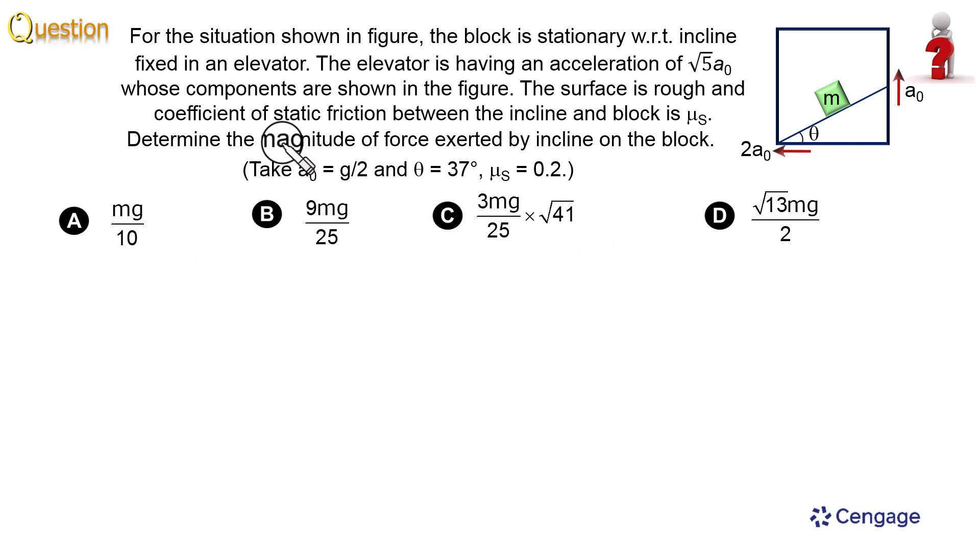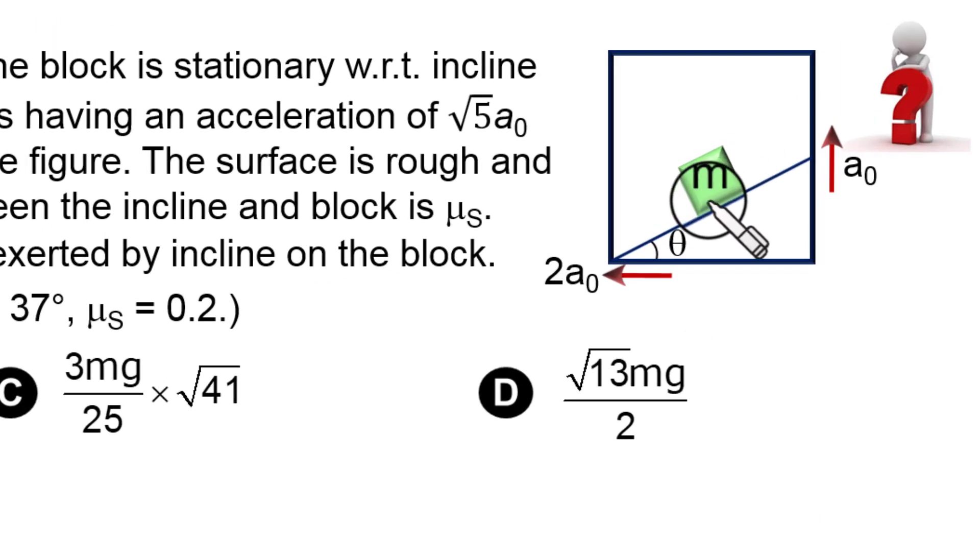We need to calculate the magnitude of the force exerted by incline on the block. This block is in contact with the incline surface, so the contact force between the block and incline surface should be the resultant of the normal reaction and friction force. Here we need to calculate the resultant of the normal reaction and friction force.